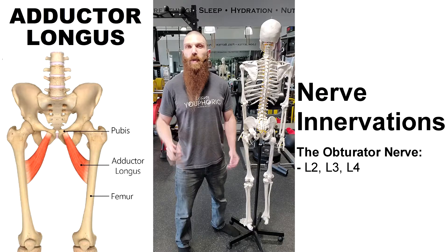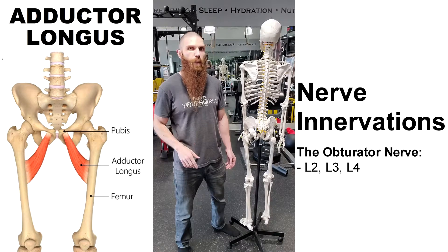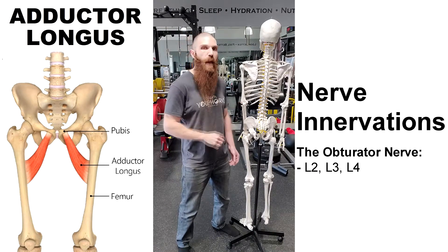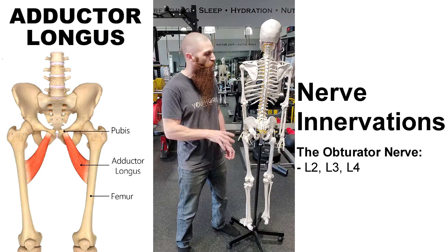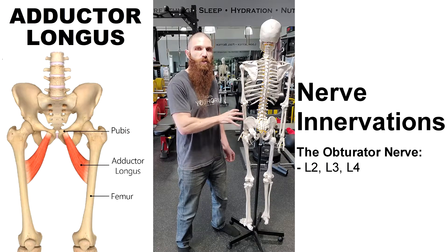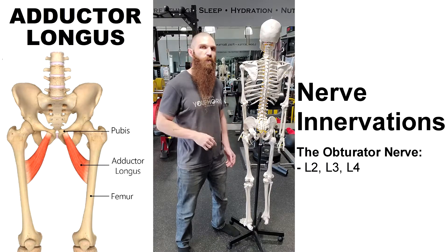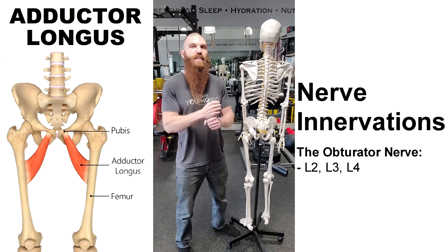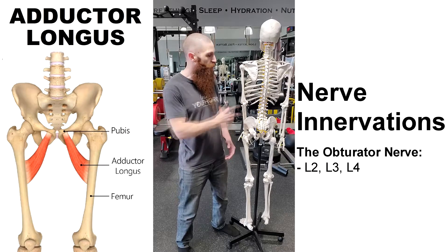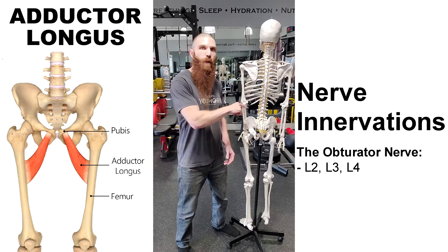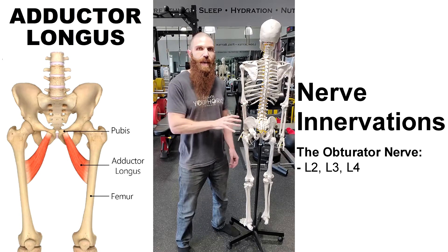The adductor longus is innervated by the obturator nerve, and more specifically your L2, L3, and L4 nerve roots. And the reason that's going to be very important is because if you have any type of damage or compression to those nerve roots, then the nerves will not be able to send the proper signal to the adductor longus, which in turn will limit blood flow and oxygen to that area. So what we can do to address that would be to do some ELDOA exercises for those nerve roots, because the whole purpose of an ELDOA is to create space within a joint. So if we create space within the joint, that can improve the function of the nerve roots, and then in turn that will allow the nerves to send the proper signal to the adductor longus muscle, which will allow proper blood flow and oxygen in that area.